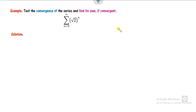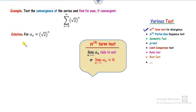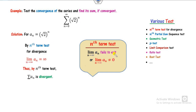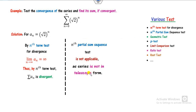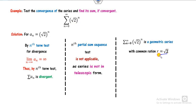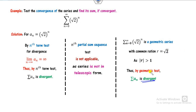Look at another example. We first check the nth term test: the limit as n approaches infinity clearly goes to infinity, which means it fails to exist, so by the nth term test the series is divergent. The sum cannot be found as it diverges. The nth partial sum sequence is also not applicable as it is not a telescopic series. Can it be solved with the geometric series test? Yes — this is again a geometric series. The common ratio is √4 = 2, which is greater than 1, so by the geometric series test it is also divergent. Both the nth term test and the geometric series test confirm divergence.